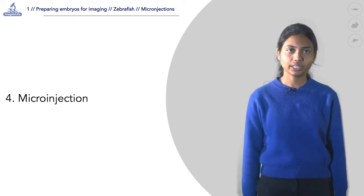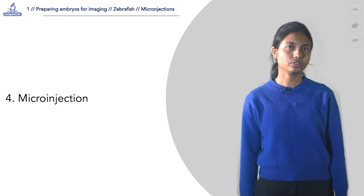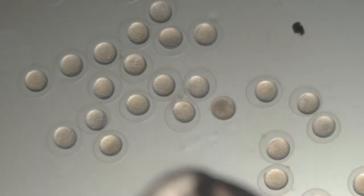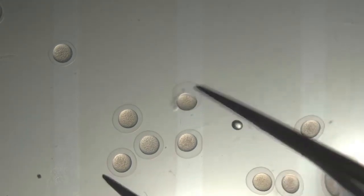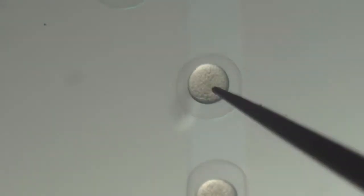Fertilized eggs are collected shortly after spawning to allow microinjection at the one-cell stage. Embryos are lined up in the narrow grooves of the injection plate with the cell positioned on top or slightly lateral using forceps.